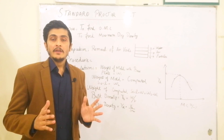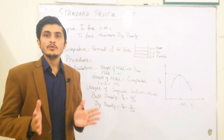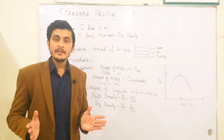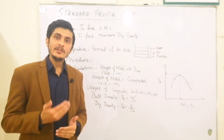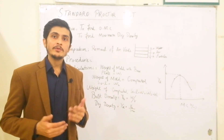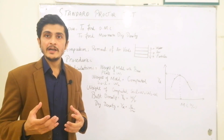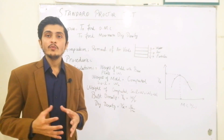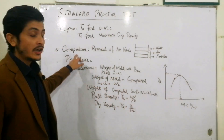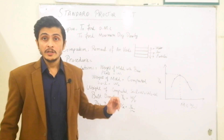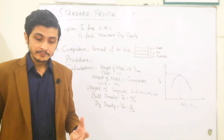Why are these things necessary? Because we need to optimize the dry density of soil. To get the maximum value of dry density, we need to compact the soil. So, coming back to compaction — what is compaction and why is it done?